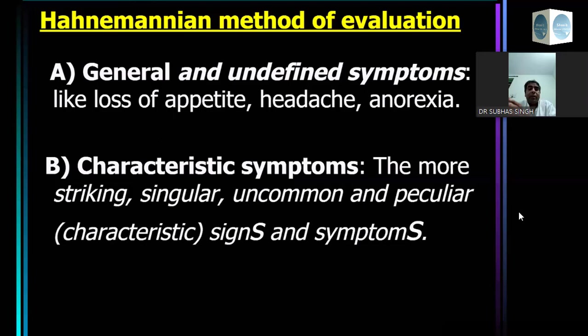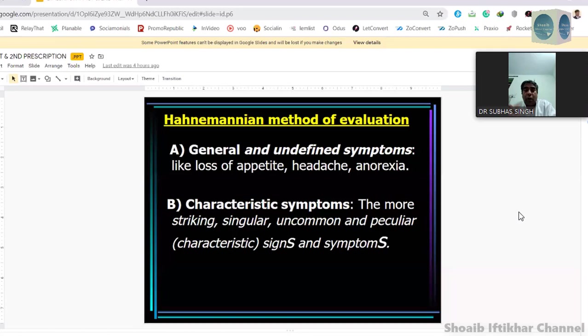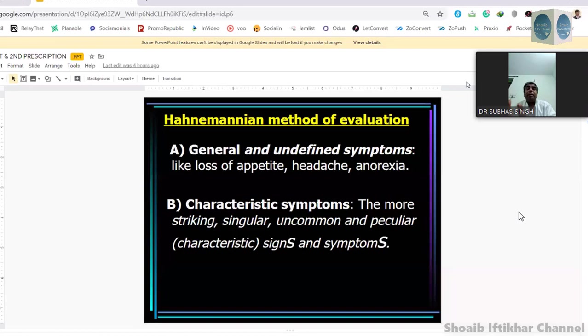But those things which are peculiar, uncommon, singular — they are the ones which are real. And this is what Hahnemann said in aphorism 153 of the Organon. However, we very often miss an important point when discussing Hahnemann's evaluation: in aphorism 153, when he was talking about characteristic symptoms — singular, uncommon, peculiar — he was not talking about one symptom. He was talking in plural. So it is not to be understood that one symptom, however peculiar or uncommon, is going to help us in prescribing. Many times we loosely understand it as 'keynote,' but the fact is it is not keynote — it is keynotes. Uncommon, peculiar, characteristic symptoms are plural, not singular.